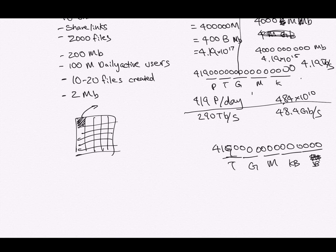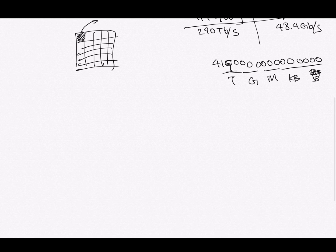So very comparable to the 290 gigabytes per second ingress. You can see that this is a very large scale system — it's going to be very tough to do this on one computer. So we already know we're going to need to use some distributed system fundamentals.